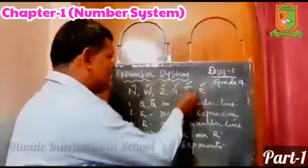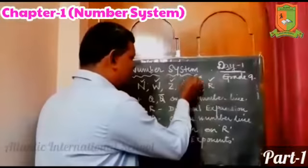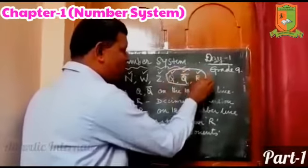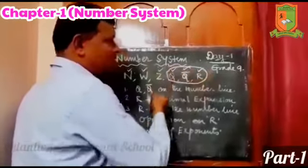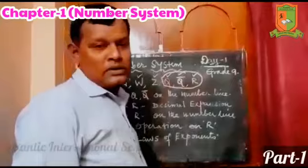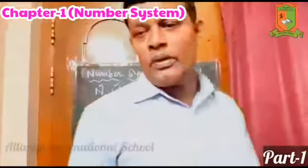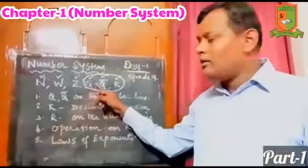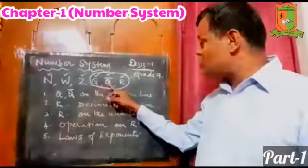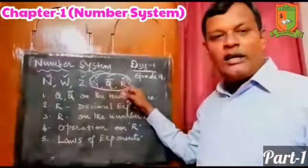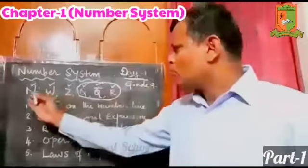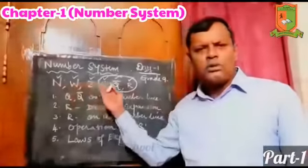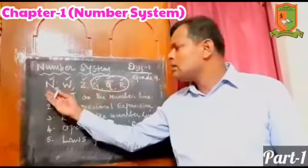Now, basically in ninth standard we will be concentrating on these three number systems — that is rational, irrational, and the real numbers. You have learned the others in the lower classes.